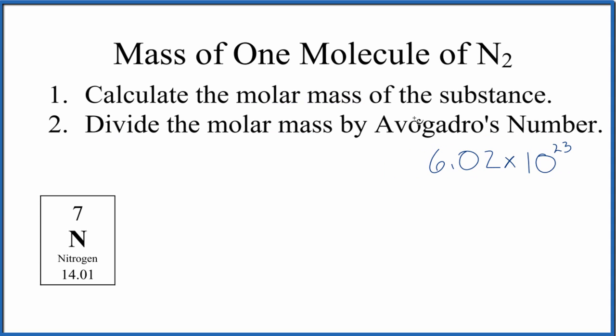The molar mass for nitrogen, one atom of nitrogen, is 14.01 grams per mole. We have two. So two times 14.01, and the units are grams per mole. That's the molar mass for N2. If you need help with that, there's a link at the end of this video.